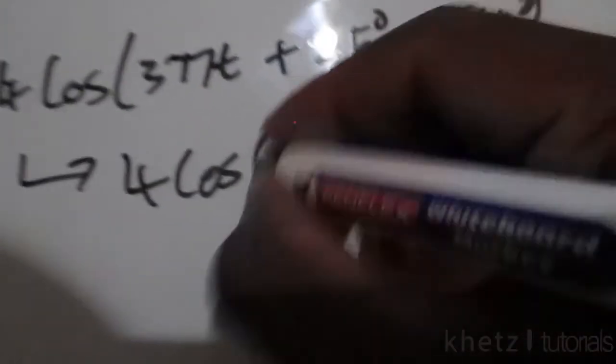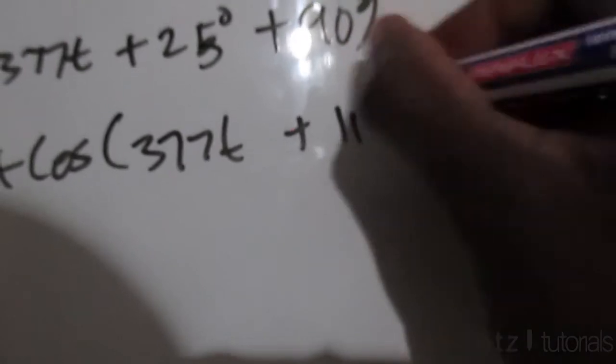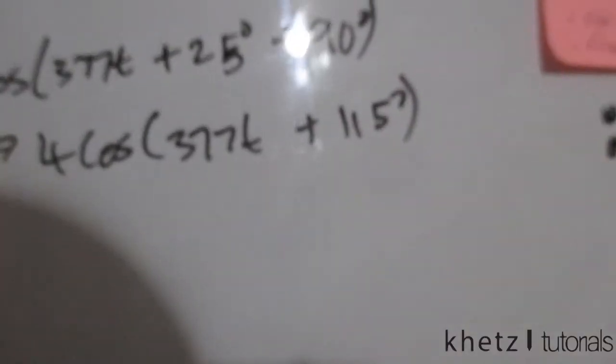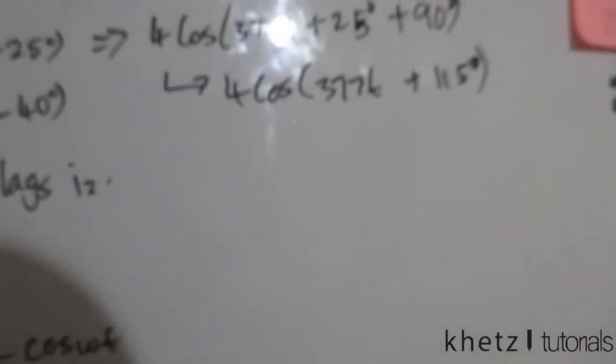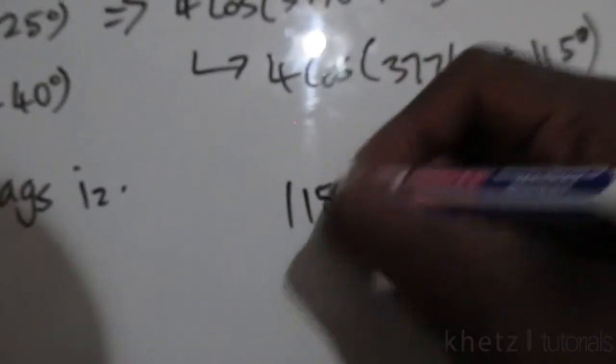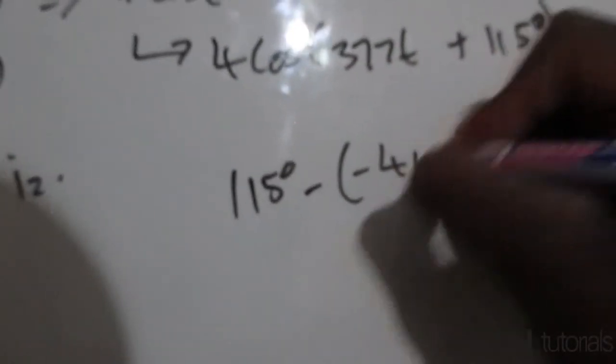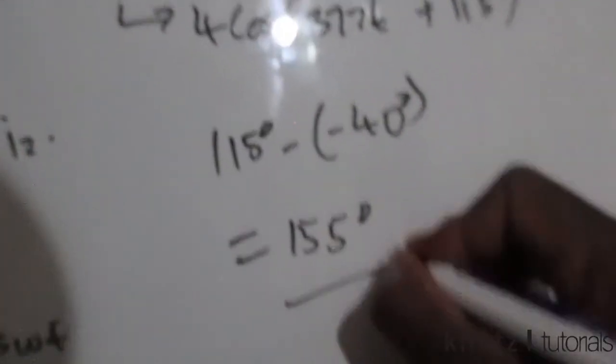Now here's what you're going to do. Now that we already know that i1 actually leads, now you're going to find the actual difference between the two phases. So now I have 115 once this is converted into a positive cosine, and here we have negative 40. So what you're going to say is 115 degrees subtract negative 40, and this will give you 155 degrees, which is the exact same answer as the one which we got using this diagram.